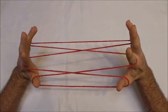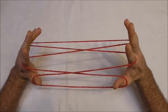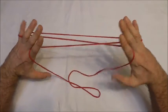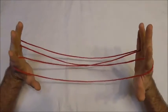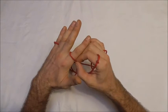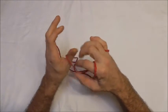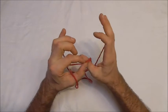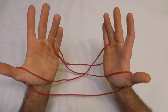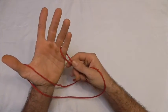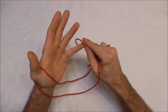I just want to drop my thumb loops and then transfer the pointer finger strings onto the thumbs. And then I want to give the little finger loops a half twist towards me.